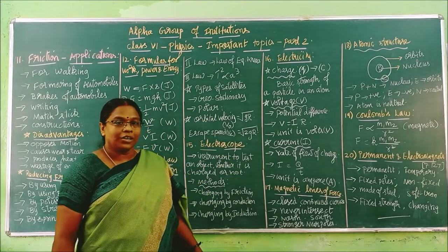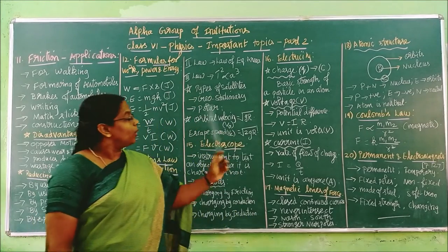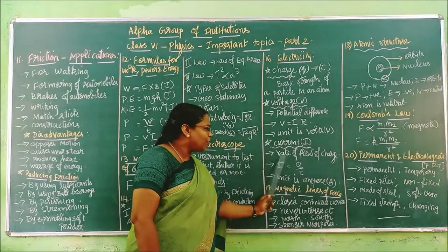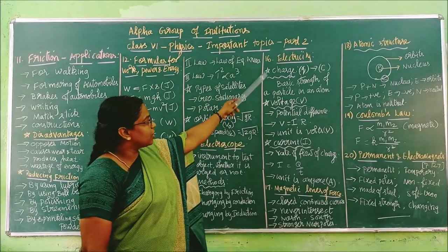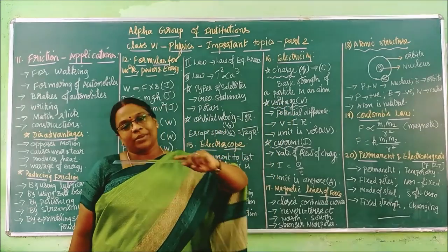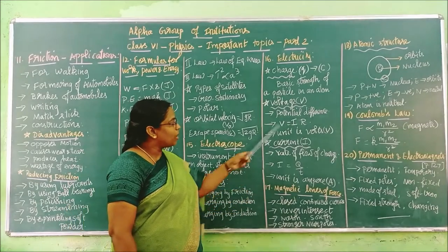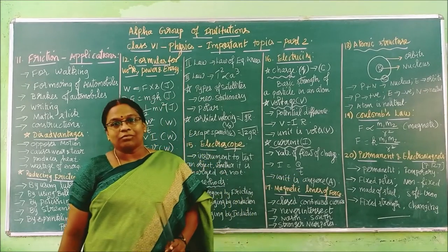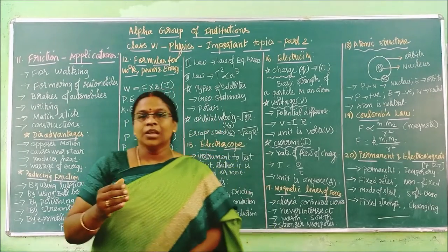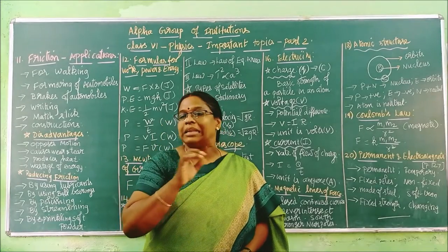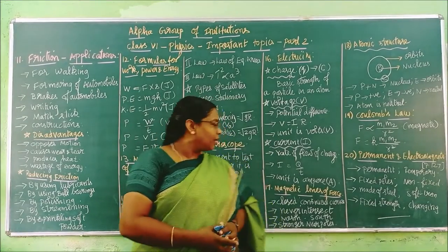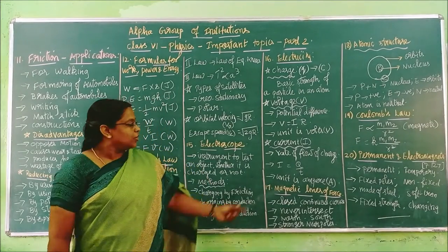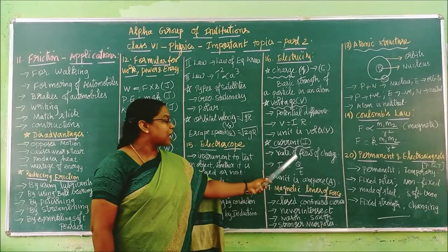Now we move to the third term: electric current. Its symbol is capital I. Current is the rate of flow of charge — that means charge divided by time. The formula is I = Q/T. Current is equal to charge by time.